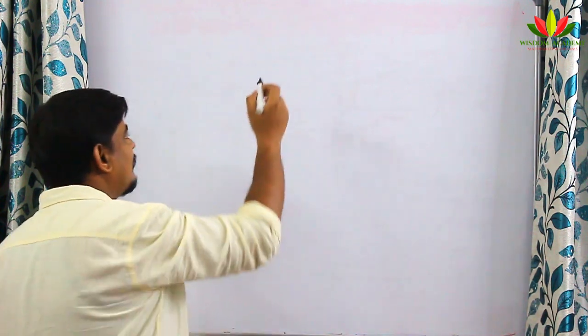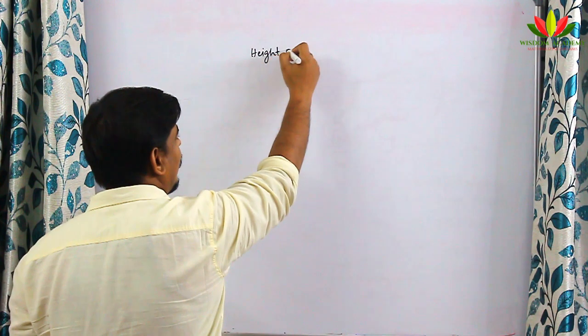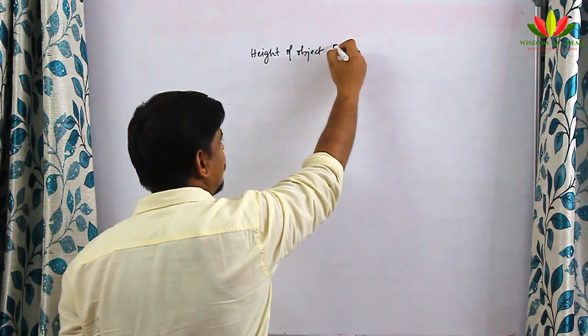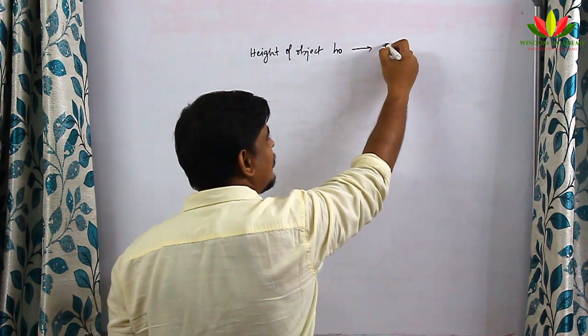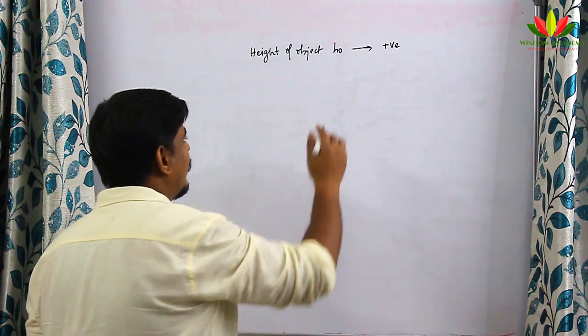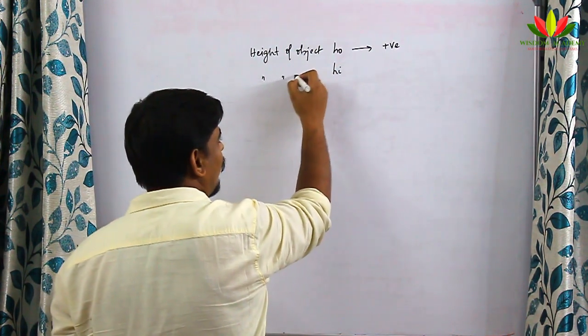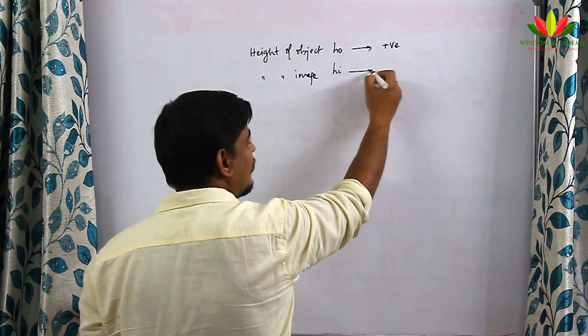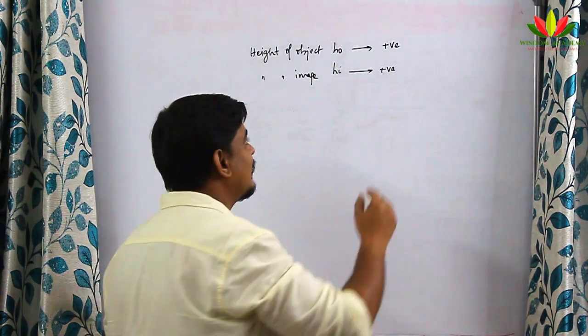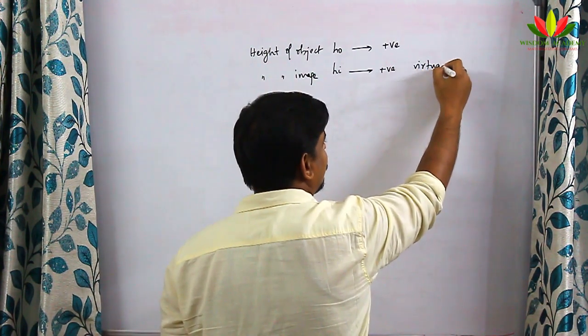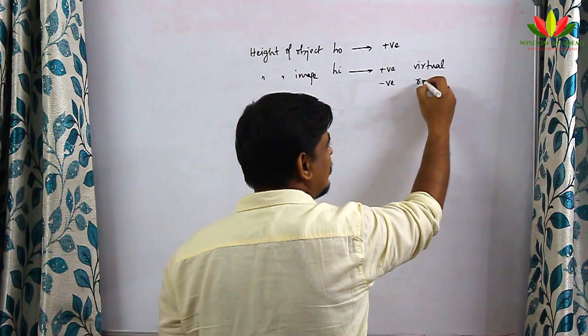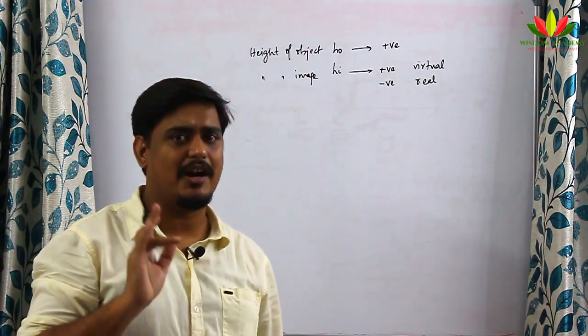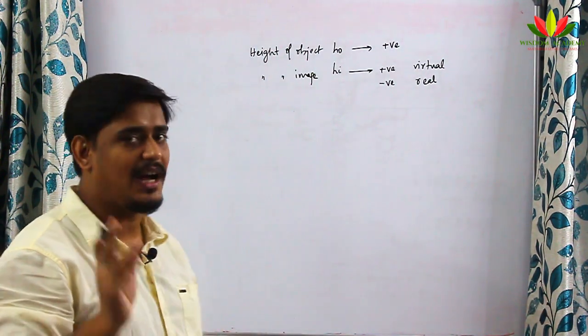The sign convention is very important, and today I'm going to give a small trick to remember it. The height of the object (H_o) will always be positive. The height of the image will be positive if the image is a virtual image, and negative if the image is a real image.